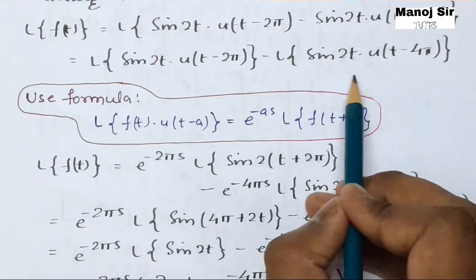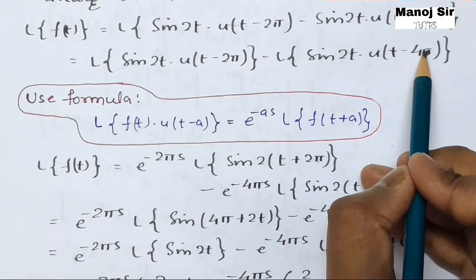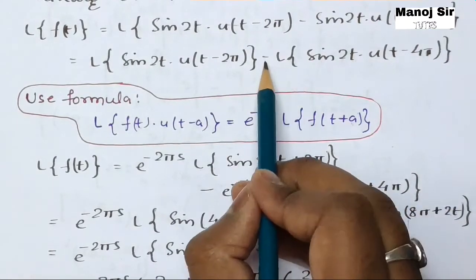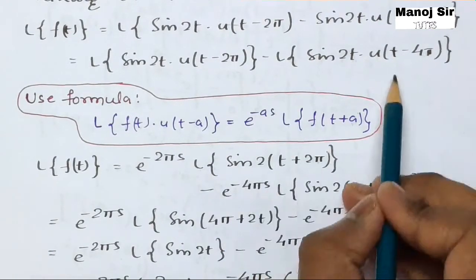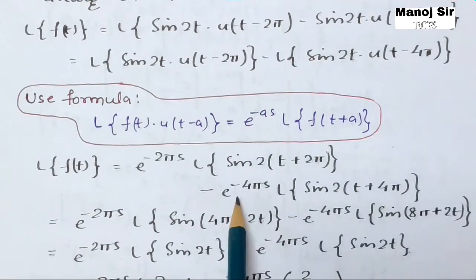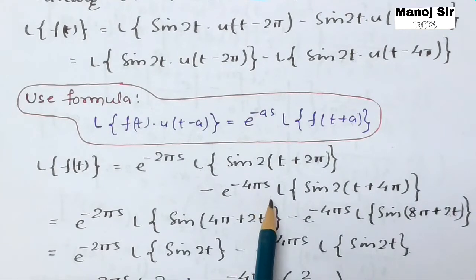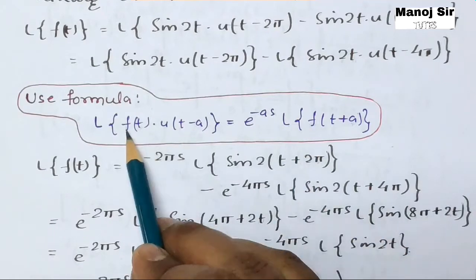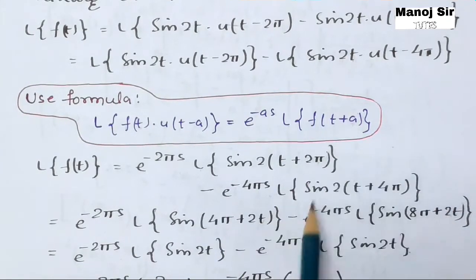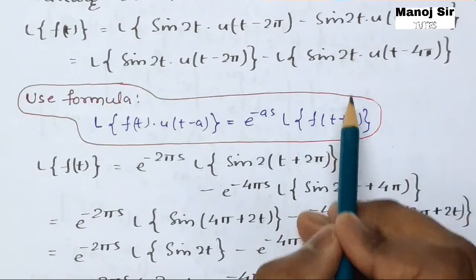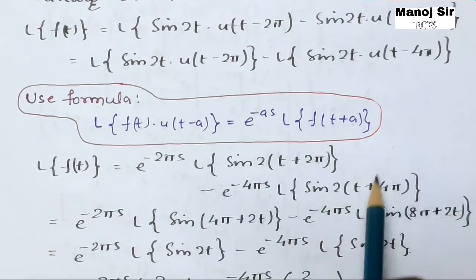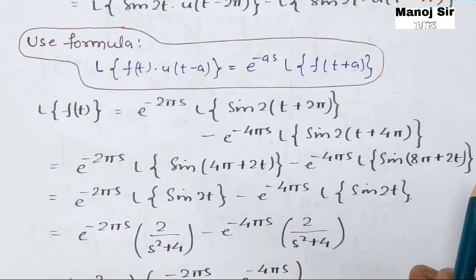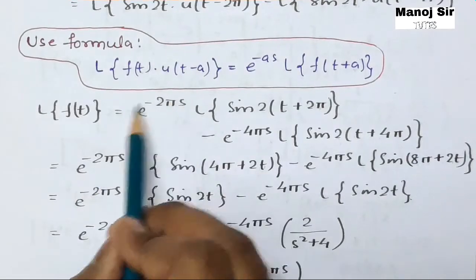For the second term, the value of a is 4π. So we get minus e^(−4πs) · L{f(t + 4π)}. Since f(t) = sine(2t), replacing t with (t + 4π) gives L{sine(2(t + 4π))}, which becomes L{sine(2t + 8π)}.